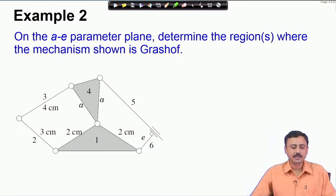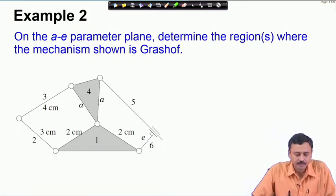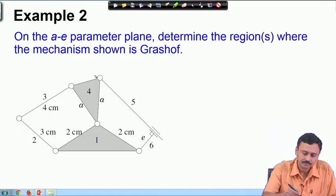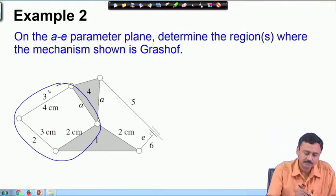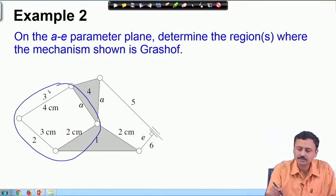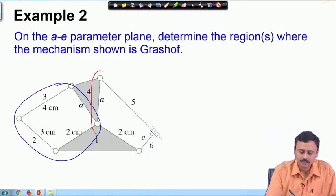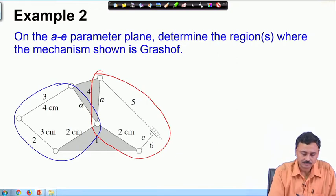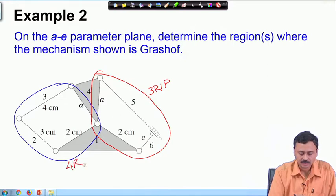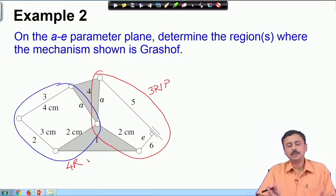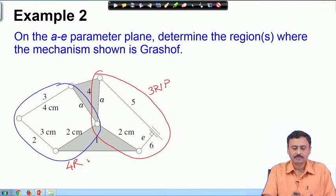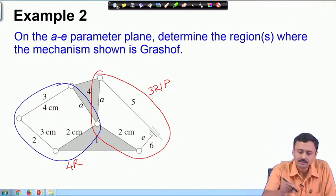This completes the analysis of the robot mechanism. To summarize: when S lies between 25 cm and 55 cm we have a double crank mechanism, and if S lies between 0 and 15 cm it is a crank-rocker mechanism. Now let us move to the next example, which involves a 4R chain coupled with a 3R1P chain.